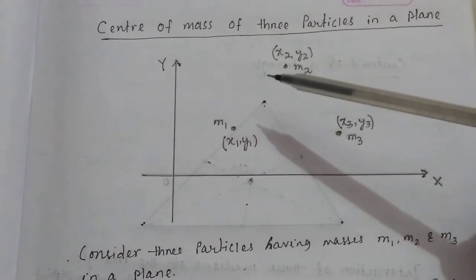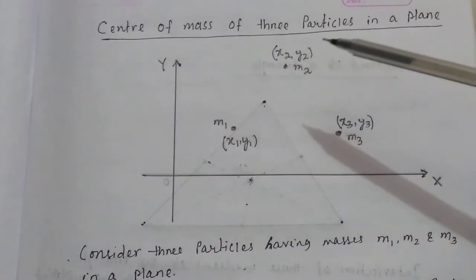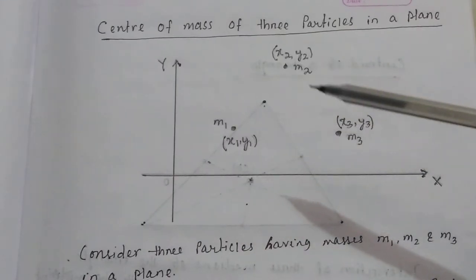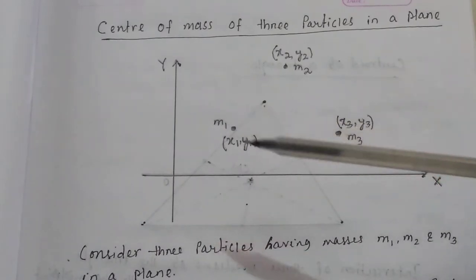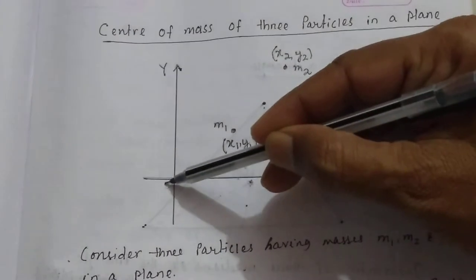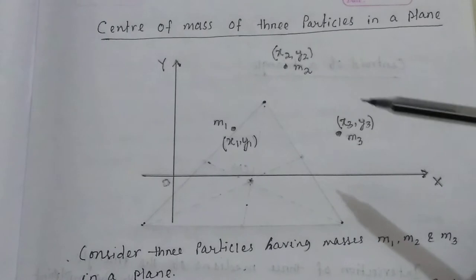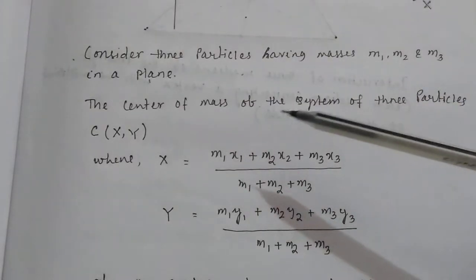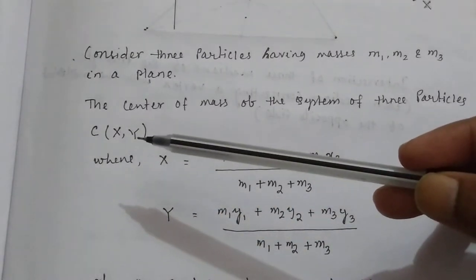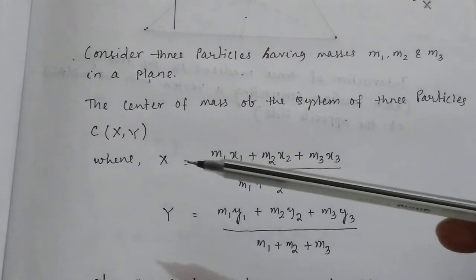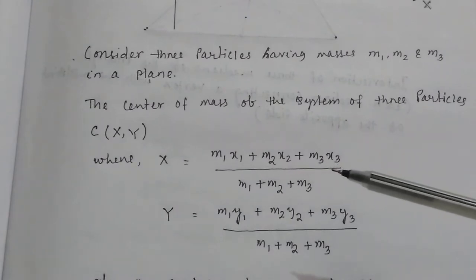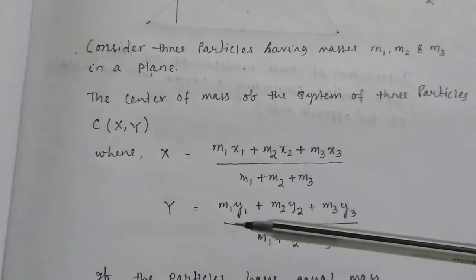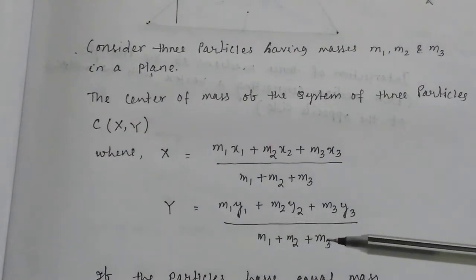Now let us discuss how to find out the center of mass of three particles in a plane. Suppose there are three particles of masses M1, M2, M3 having coordinates (x1, y1), (x2, y2), and (x3, y3) present in the xy plane. If C is the center of mass with coordinates (x, y), then the x coordinate will be M1x1 plus M2x2 plus M3x3 divided by M1 plus M2 plus M3, and the y coordinate will be M1y1 plus M2y2 plus M3y3 divided by M1 plus M2 plus M3.